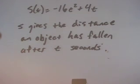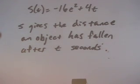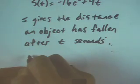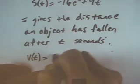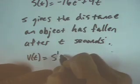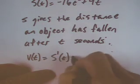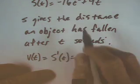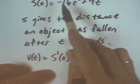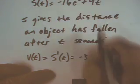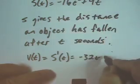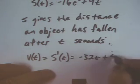If we wanted to calculate the velocity, we would simply take the derivative. The velocity of the object equals the derivative of the position function. So the velocity would be 2 times negative 16, giving us negative 32t, and then we have a linear piece, so that would be plus 4.